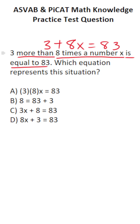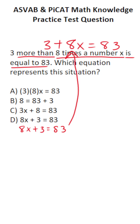So this is what our equation should look like. We can make adjustments to it accordingly. And as you can see, answer choice D says 8x plus 3 equals 83. That's the same thing as our equation — they just moved the 3 behind the 8x. So the correct answer to this one is D.